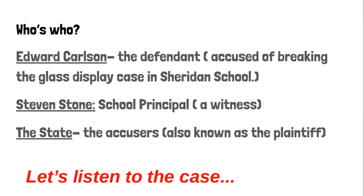Ladies and gentlemen of the jury, when a person is on trial for a crime and they cannot be positively identified, the court may rely on circumstantial evidence. Circumstantial evidence is a group of facts that can lead the jury to decide if the person is guilty or innocent. There must be enough evidence to prove a person guilty beyond a shadow of a doubt. The state has accused Edward Carlson, the defendant,